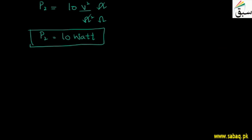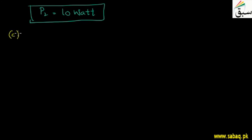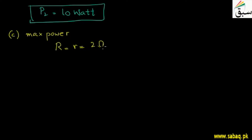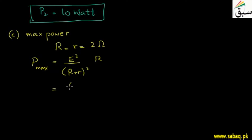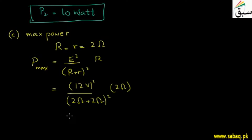Now let's look at the third case. We need to find the resistance to which the battery can deliver maximum power to the device. For maximum power transfer, the external resistance R equals the internal resistance r, which equals 2 ohms. We also need to find Pmax using the formula: P equals E squared divided by (R plus r) squared, into R. Substituting values: 12 volts divided by (2 ohm plus 2 ohm) squared, into 2 ohm.